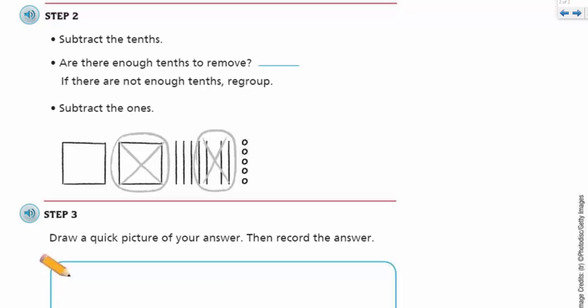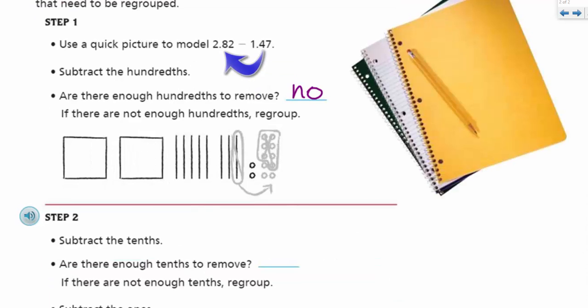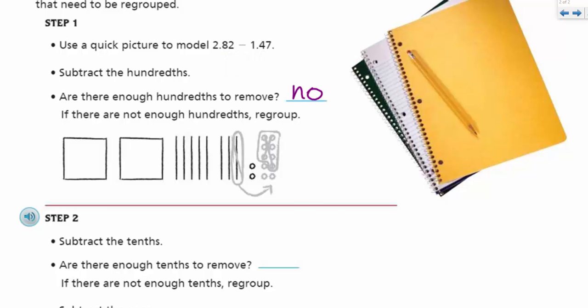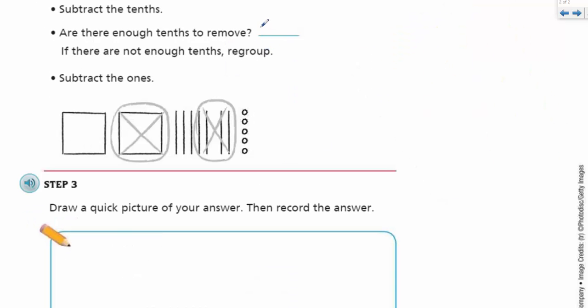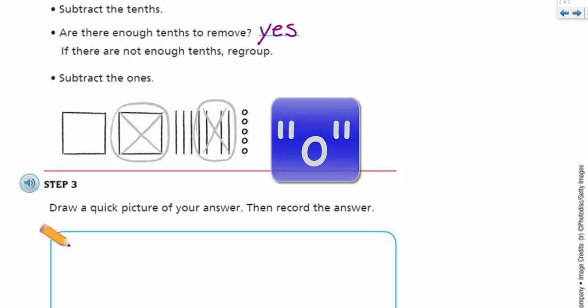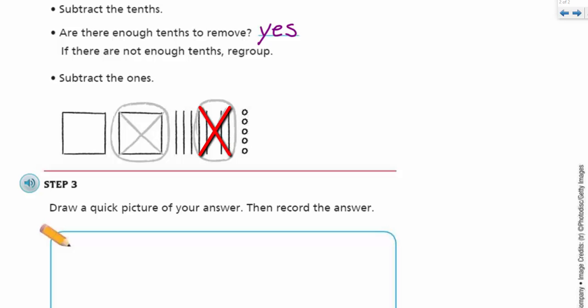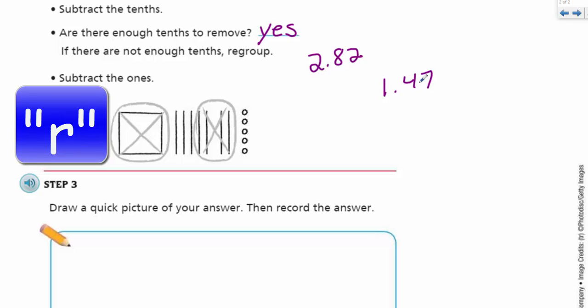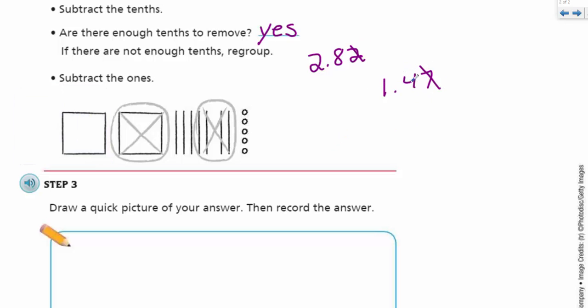Step two. It says subtract the tenths. Are there enough tenths to remove? And indeed there are. As I look at my problem at the top, I can take four away from eight. So the answer is yes. Here it says subtract the ones. Well, the ones, there was just one one in that number. The number was 2 and 82 hundredths and then 1 and 47 hundredths. We regrouped and we did the hundredths. Now, we didn't have to regroup when we did the tenths. Now, we're just subtracting the one from the two. And that's what we have there.